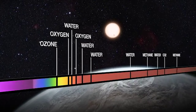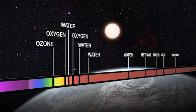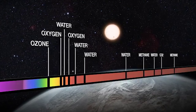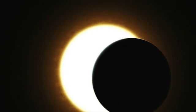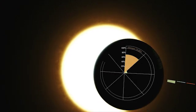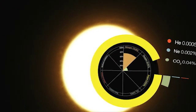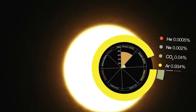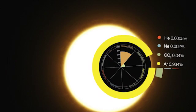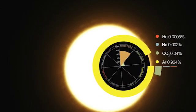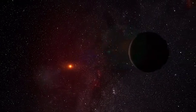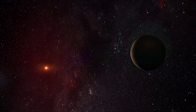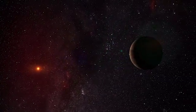Also, the stronger the line, the more of the corresponding element is present in the atmosphere. But even the strongest lines of the most abundant elements are incredibly weak and hard to detect, as only a tiny fraction of the star's light is interacting with the atmosphere of the exoplanet.